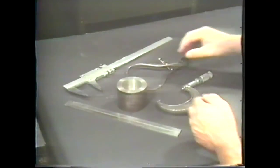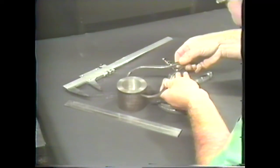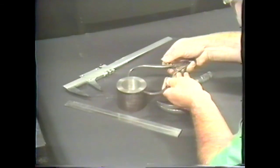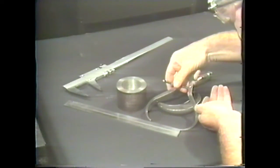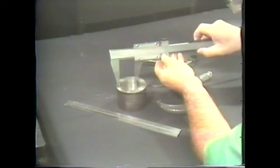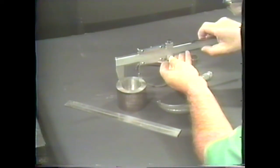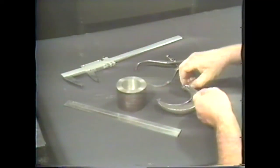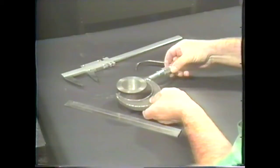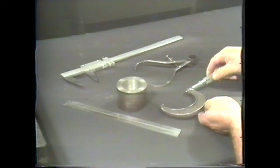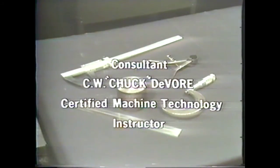When the work requires less precise measurement, steel rules or instruments graduated as steel rules can be used. When you need accuracy to within a thousandth of an inch, vernier calipers, micrometers, or other precision instruments are used. Measurement is an essential part of machine technology. And the knowledge and ability to use measuring tools will make you a better and more productive machinist.